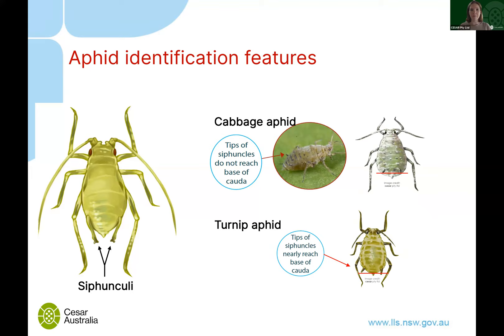Another key body part is the siphunculi — sometimes called 'exhaust pipes' — at the very end of the abdomen. They vary quite a lot in colour, length, and positioning. The cabbage aphid has tiny exhaust pipes that don't even reach the end of their body, while the turnip aphid's are a little longer, and some species have quite long ones extending beyond the body. We'll use these to compare different species.